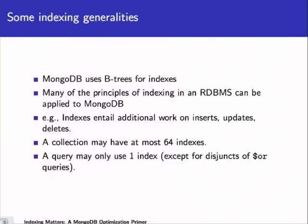MongoDB collections can have up to 64 indexes. If you need more than 64 indexes in a given collection, you're probably doing it wrong. A query may use only one index — this is a common misconception. People will build multiple indexes on different keys, query on both of those keys, and assume that query can use both indexes. But that is almost never the case, except for disjuncts — queries involving the dollar sign or operator.